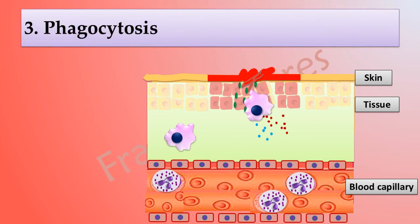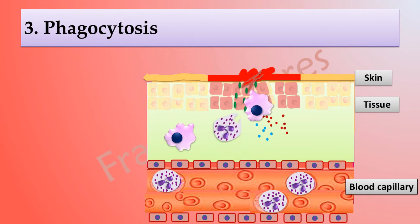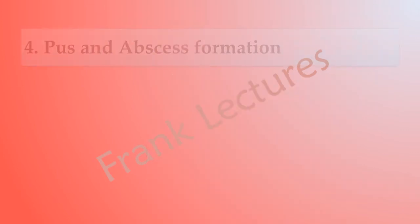Once the phagocytes reach the infected area, they engulf and destroy the invading microbes by the process of phagocytosis. Recall that the first leukocytes recruited at the site of tissue injury are neutrophils, followed by monocytes which mature into macrophages in the tissues.